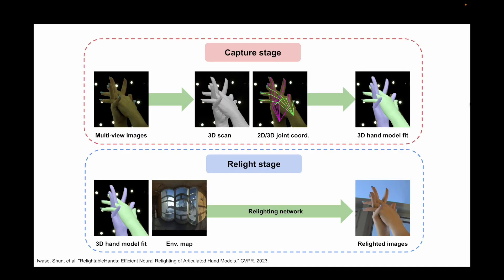We built our dataset with a two-stage pipeline. First, in the capture stage, we tracked the 3D geometry of hands accurately from 10 captures. Then, in the relight stage, we used a state-of-the-art hand relighting network that takes 3D hand geometry and an environmental map to render relit images.